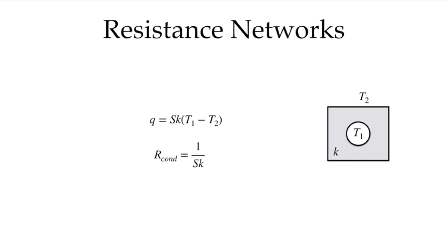Now, we can also use this in resistance networks. If we know what the shape factor is, of course, comparing the definition of our thermal resistance, we can see that the definition of a thermal resistance for this case is 1 over the shape factor times the conductivity. And that's handy when we want to use this in a resistance network.